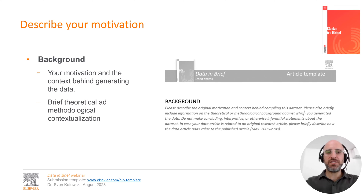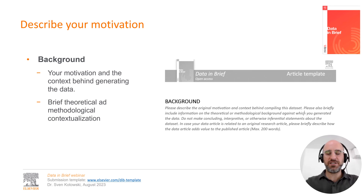The background section provides you with an opportunity to provide the general context that led you to generate the data set. It serves two main purposes. First, it describes the theoretical or methodological background against which the data set was generated. Second, it has an auxiliary function, as it helps to keep the focus of the following two sections on the data set itself. It is to these sections that we turn now, starting with the data description.